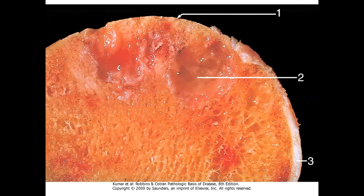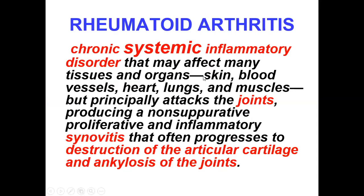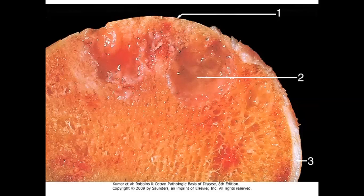This diagram shows the cartilage and eburnated articular surface. There is subchondral cyst formation, subchondral bone changes, and residual articular cartilage. This is the pathology of osteoarthritis.